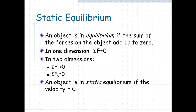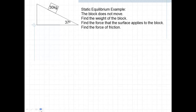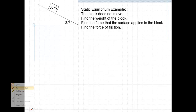An object is in static equilibrium if the velocity is also zero — that's a very special case. Let's look at this example: we've got a block resting on an incline. This is a static equilibrium problem where the block is not moving. We want to find the weight of the block, find the force that the surface applies to the block, and find the force of friction. The first step, as you know, is to draw the force diagram.